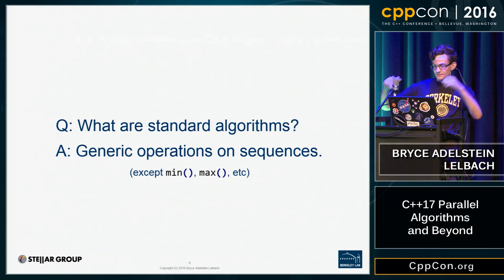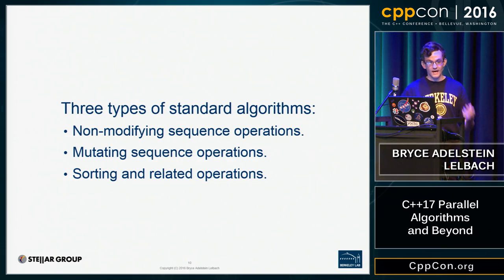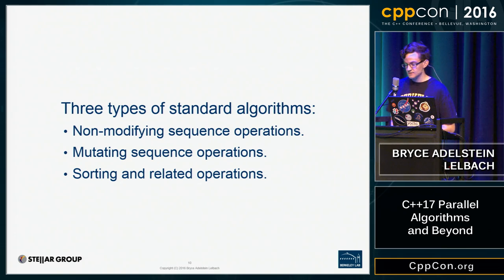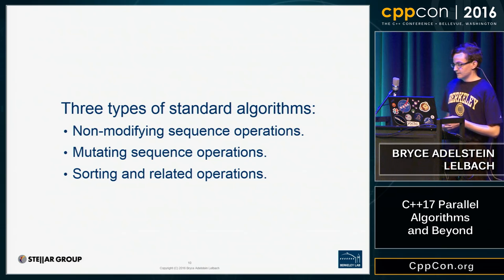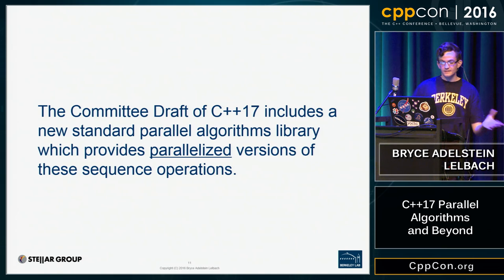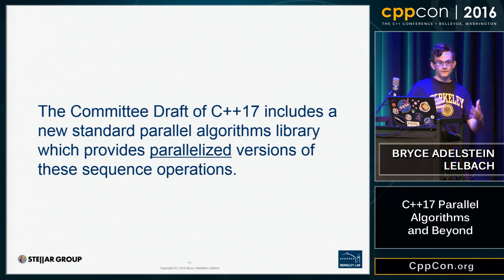Standard algorithms are generic operations on sequences. There are three types: non-modifying sequence operations like for_each and find; mutating sequence operations like transform and copy; and sorting and related operations like sort and binary search. The new parallel algorithms library provides parallelized versions of these sequence operations, and it will tentatively be in C++17. It's currently in the committee draft, which means it's very likely going to be there, with perhaps some bug fixes.